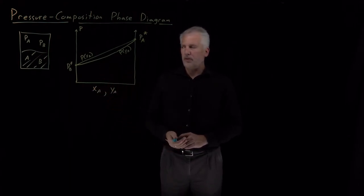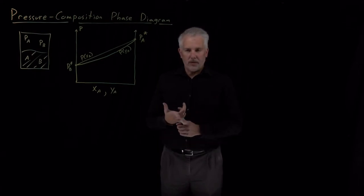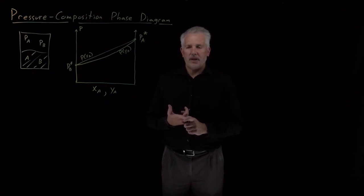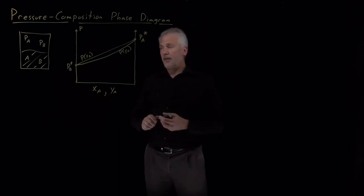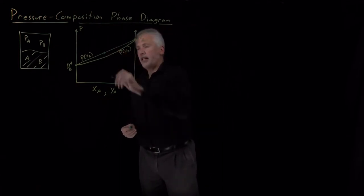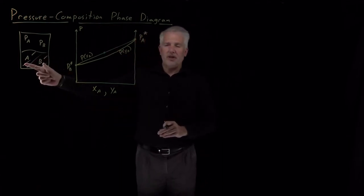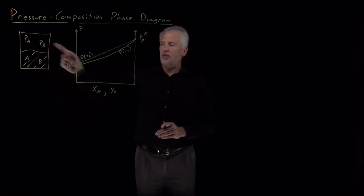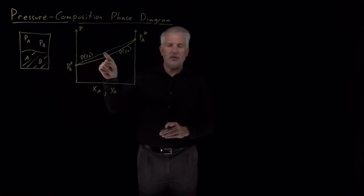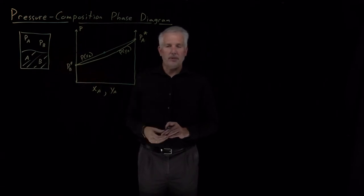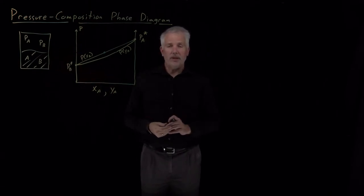The reason we know it's a phase diagram is because it describes the equilibrium condition — the condition that must be obeyed for a system to have two different phases in equilibrium with each other. If we're on this line, if the pressure is exactly equal to the value predicted by this curve for a particular mole fraction in the liquid phase, then the two phases are in equilibrium. If not, they won't be in equilibrium.